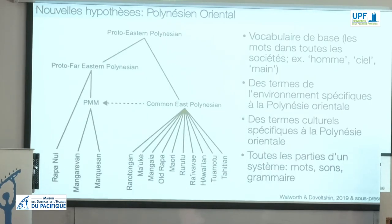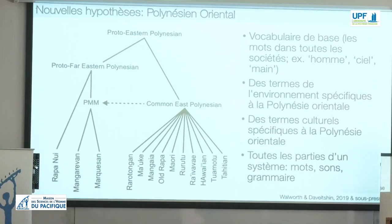This work is based on comparing specific kinds of linguistic data systematically across all available languages. This includes basic vocabulary — things that tend not to change — environmentally important vocabulary such as words relating to fish, animals, insects, and plants, as well as vocabulary related to culture and material culture. The subgroups of Far East Polynesian and Marquesan-Mangerewa are supported by multiple innovations at all parts of the linguistic system: in the lexicon, the phonology, and within the grammar. These innovations are shared by all members of the group, so they are clearly defined subgroups.